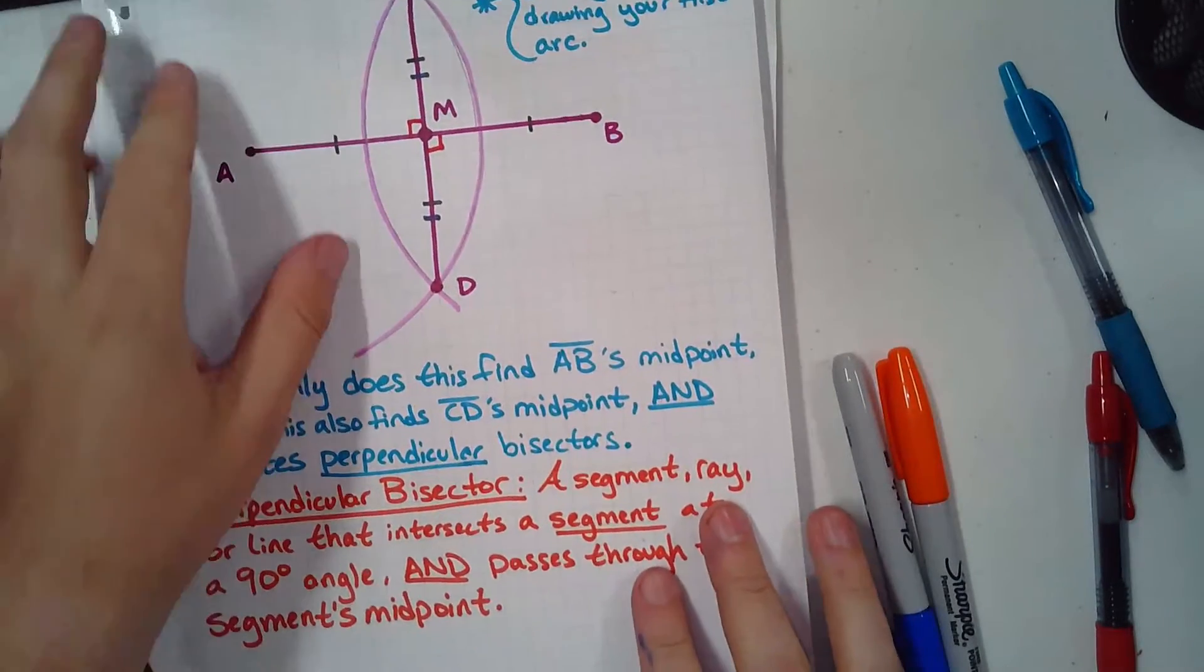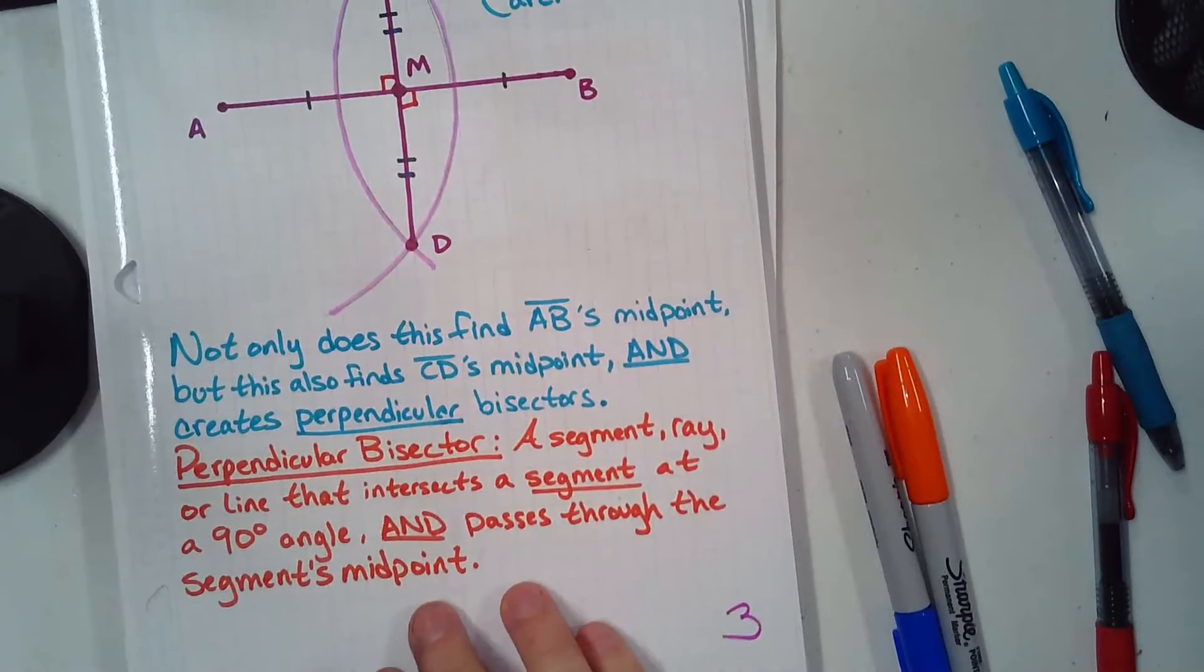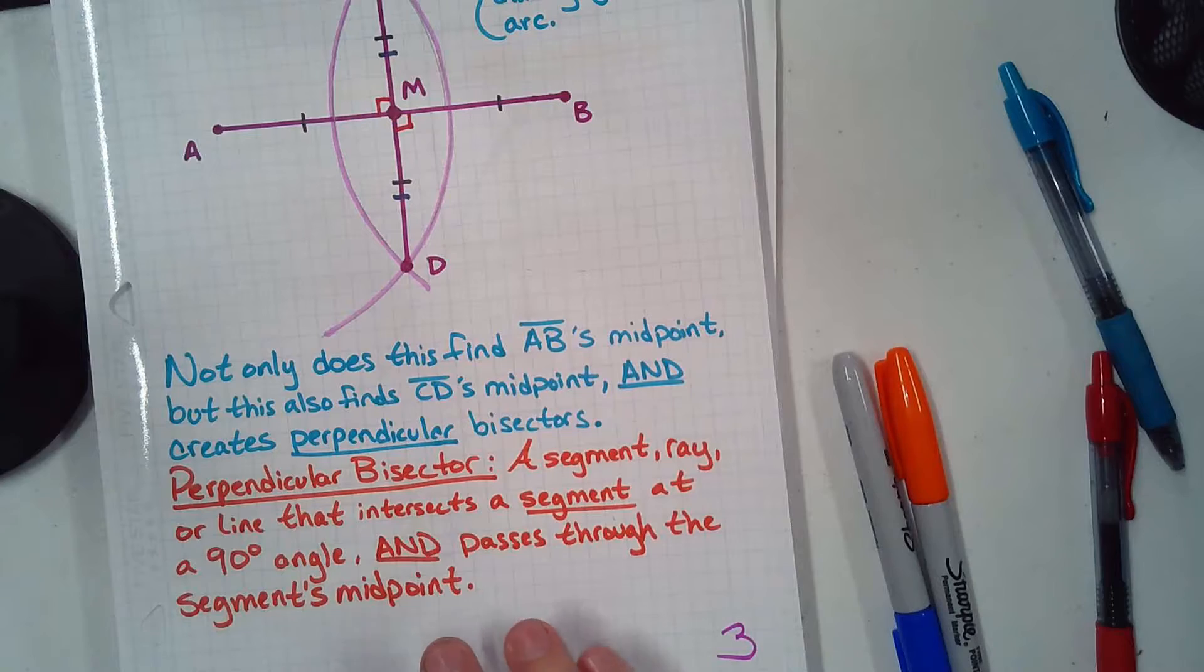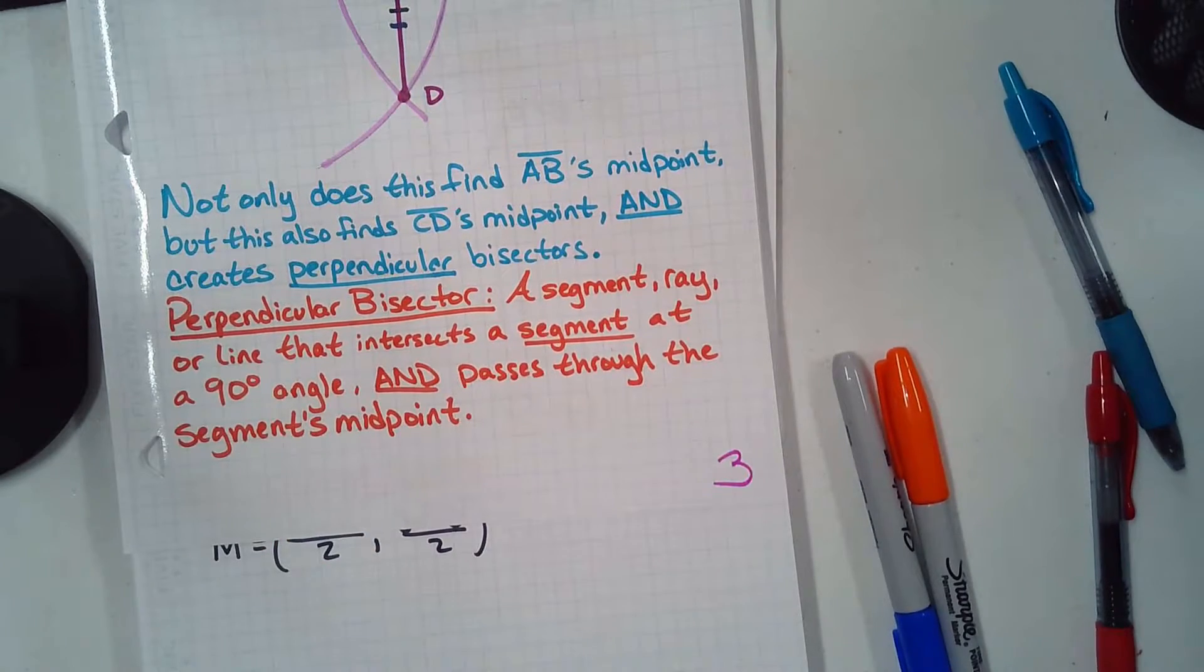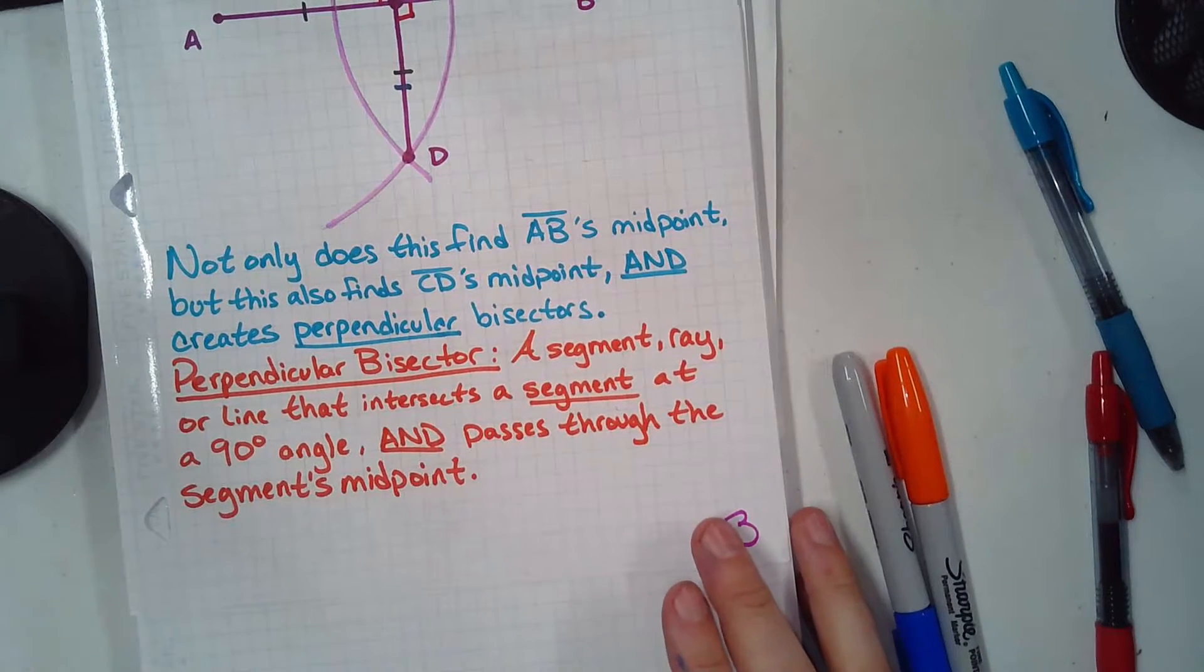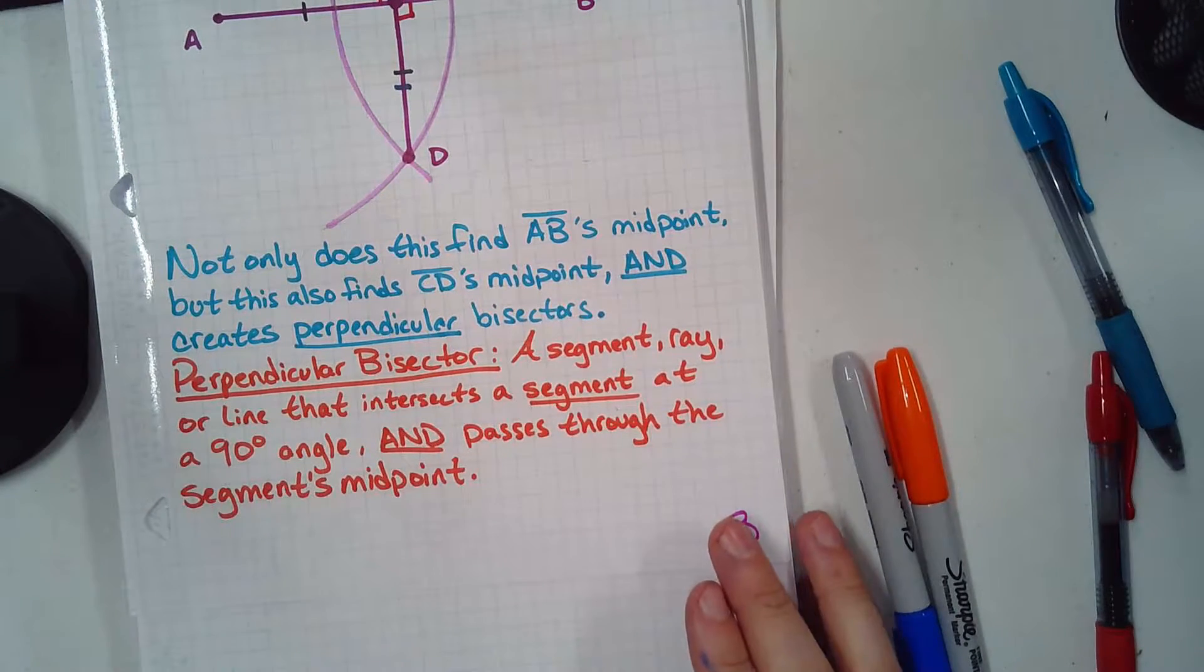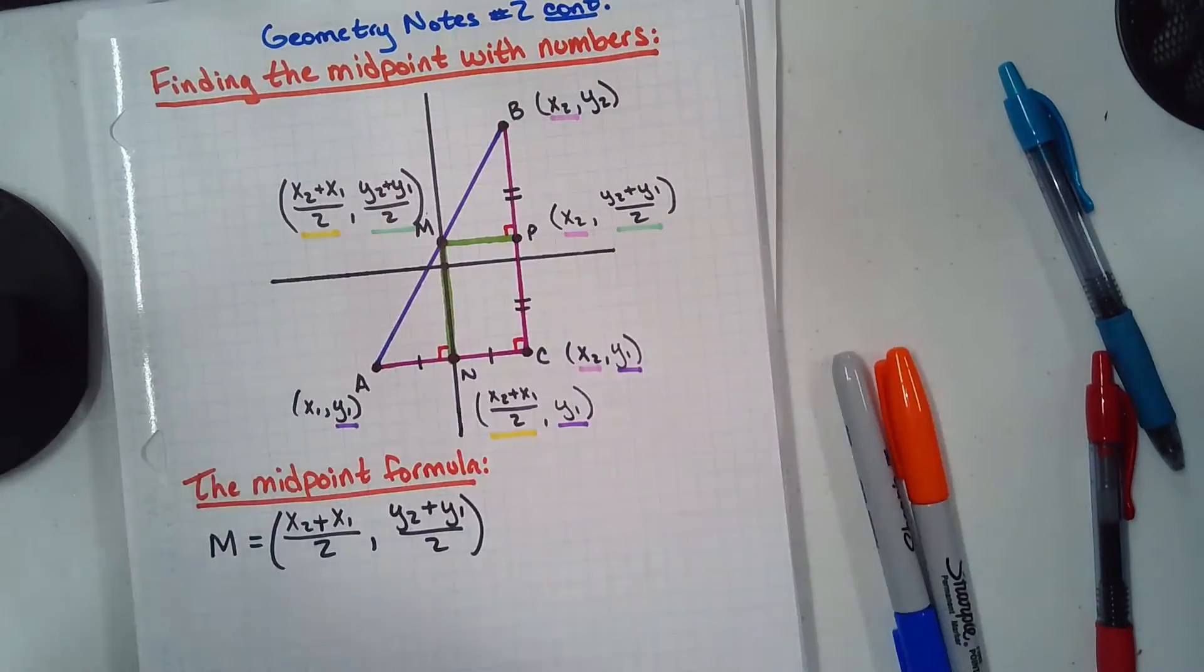It's a bisector that got a degree. A perpendicular bisector. So, not only did we find AB's midpoint, but we also found CD's midpoint and we created perpendicular bisectors. So, with one construction, we got four different things. Two perpendicular bisectors and two midpoints. What is a perpendicular bisector? Formally, the definition is a segment, a ray, or a line. So, pretty much anything. That intersects a segment at a 90 degree angle and passes through the segment's midpoint. So, what is a perpendicular bisector? It's something that hits something at 90 and cuts it in half. It bisects and it perpendicularizes. I made up that word. Turn the page.